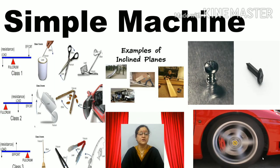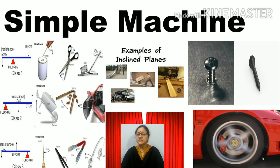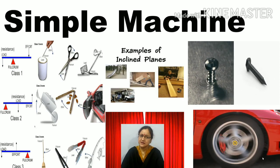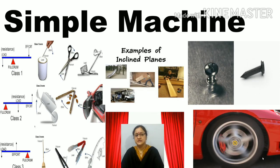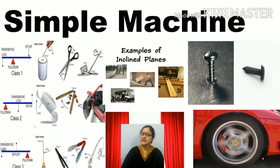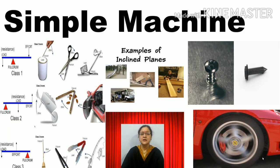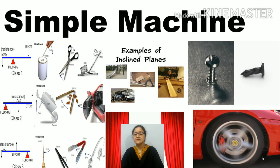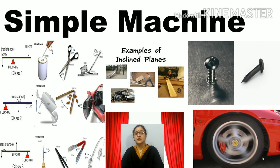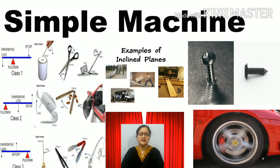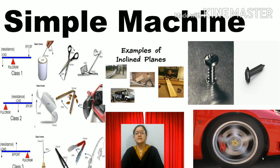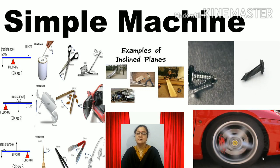Always remember one word: FLEA — F-L-E. In the first class lever, fulcrum is in the center. In the second class lever, load is in the center. In the third class lever, effort is in the center. So, how will you recognize different types of levers? By the word FLEA. If the fulcrum is in the center, it is a first class lever. If the load is in the center, it is a second class lever. If the effort is in the center, it is a third class lever.